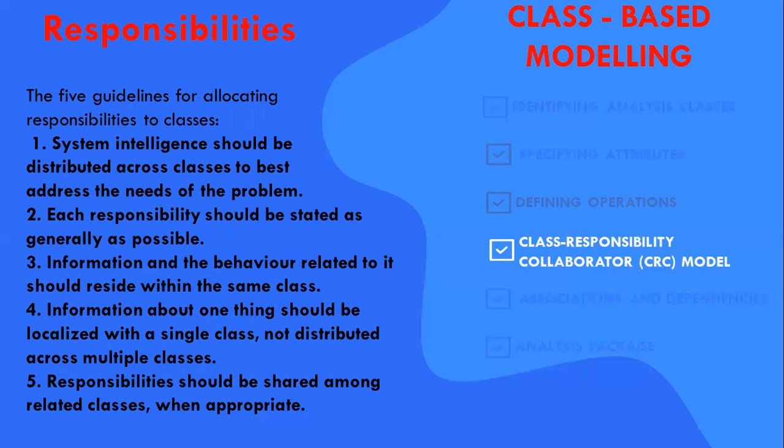Coming to the fourth responsibility, information about one thing should be localized with a single class, not distributed across multiple classes. That is, a single class should take on the responsibility for storing and manipulating a specific type of information. This responsibility should not, in general, be shared across a number of classes. If the information is distributed, then the software becomes more difficult to maintain and more challenging to test. The fifth responsibility is responsibilities should be shared among related classes when appropriate. There are many cases in which a variety of related objects must all exhibit the same behavior at the same time.